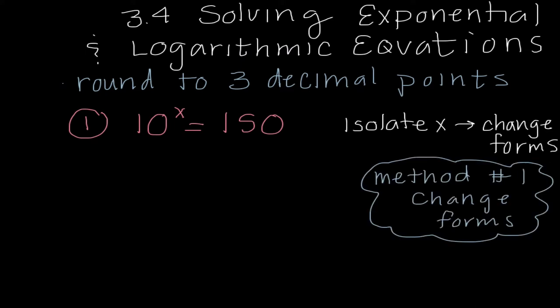So our first method is to change forms. We practiced that earlier in this chapter, where if I have something in exponential form, I can write it as a logarithm. This would become log base 10 of 150 is equal to X. We can input this into our calculator, and we end up getting 2.176 is equal to X.